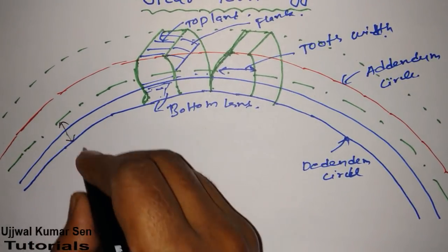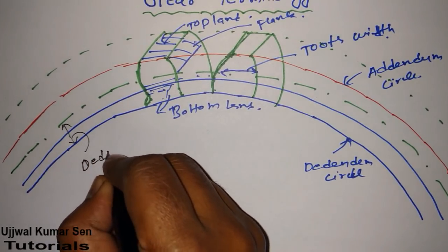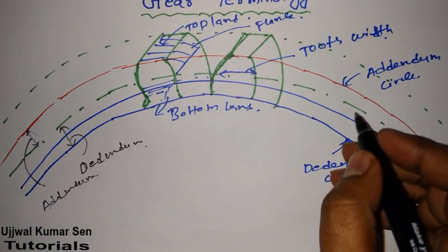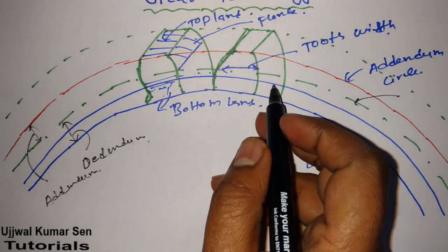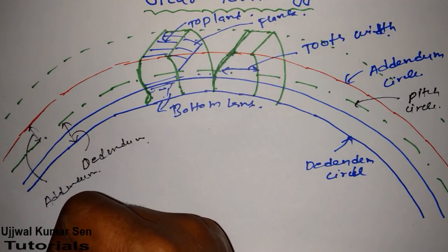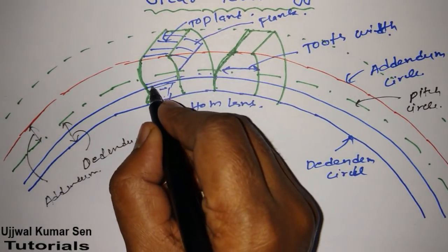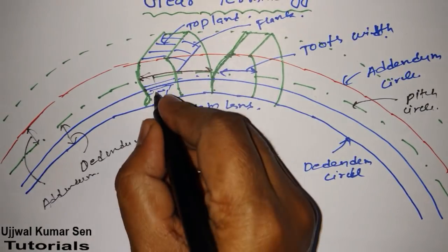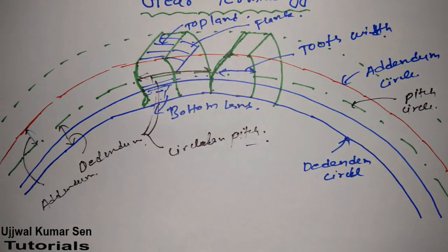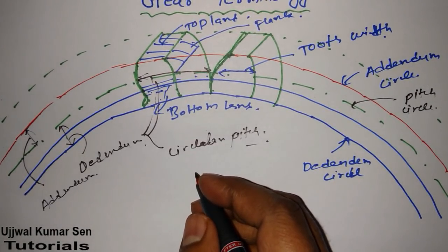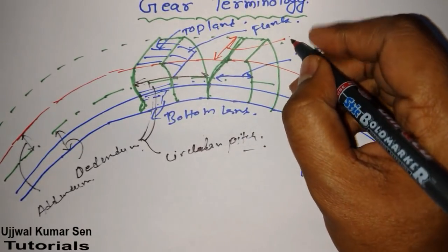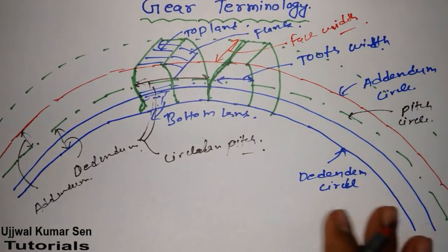From the pitch circle down to the dedendum circle, that distance is known as dedendum. And from the pitch circle up to the addendum circle, that distance is known as addendum. This dash line or center line is known as the pitch circle. Pitch circle is also important in gear terminology. From here to here along the pitch circle is known as circular pitch. And this distance from end to end of the gear is known as width of the face, or face width.